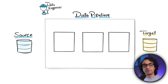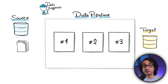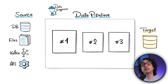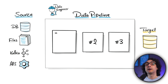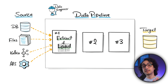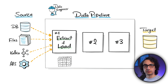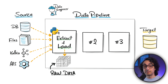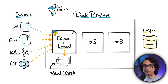The sources of our data could be in different technologies: databases, files, streams like Kafka, or APIs. The very first step in our pipeline is Extract and Load — this is where everything starts. We connect to the sources, read the data, and load it into our system — just taking a copy and putting it in our system, no transformations.